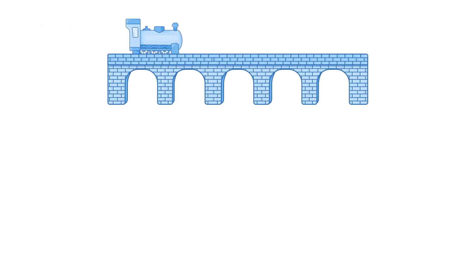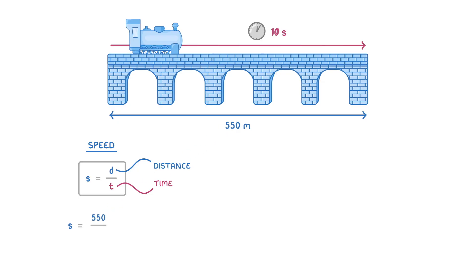To help us understand this difference, let's imagine that we have a train travelling across a bridge. The bridge is 550m long, and it takes the train 10 seconds to cross it. To calculate the speed of the train, we need to take the distance it travelled and divide it by the time it took. So 550m over 10 seconds, which gives us the scalar quantity of 55m per second.